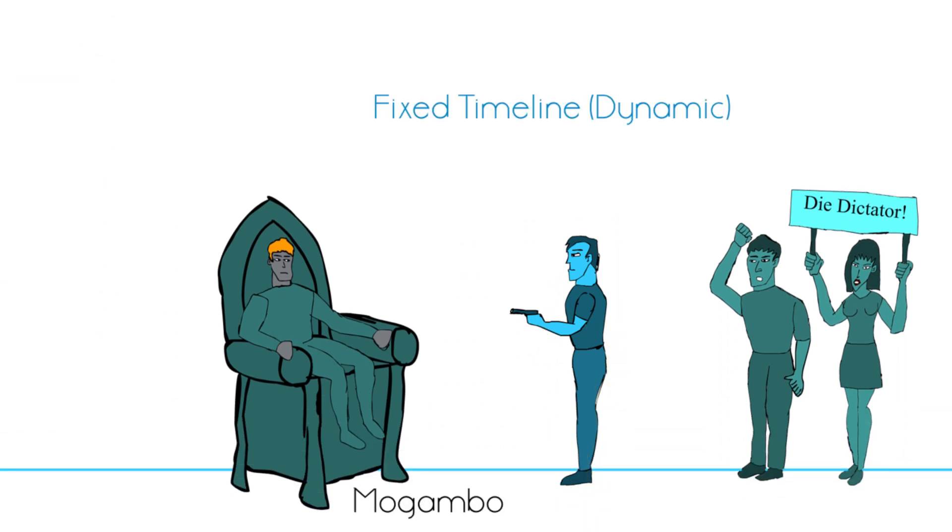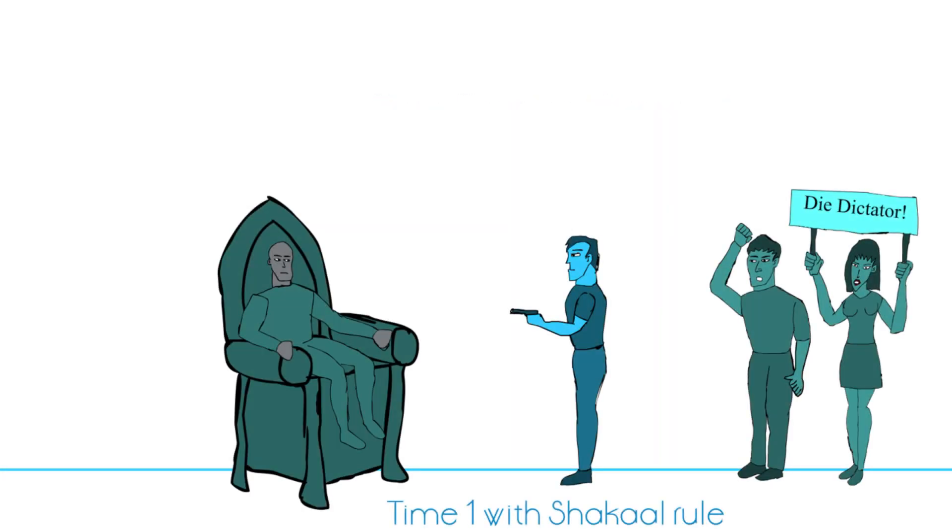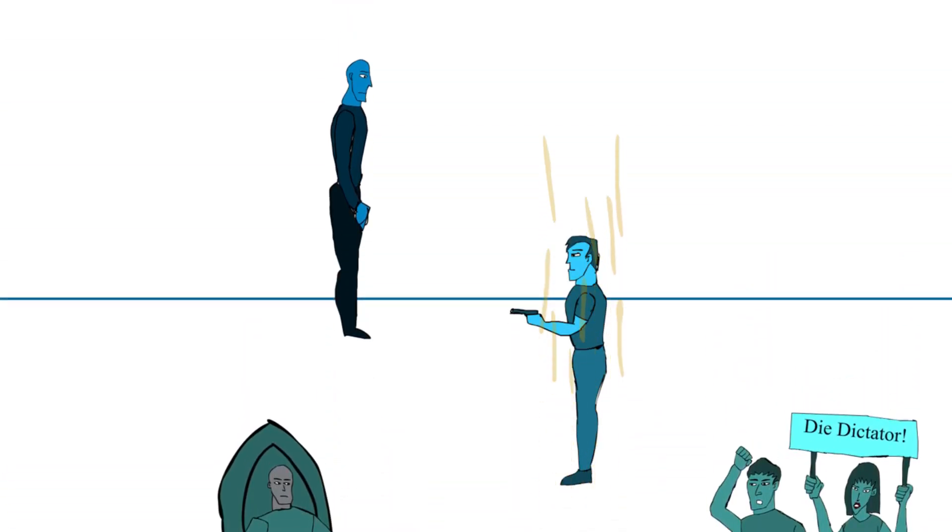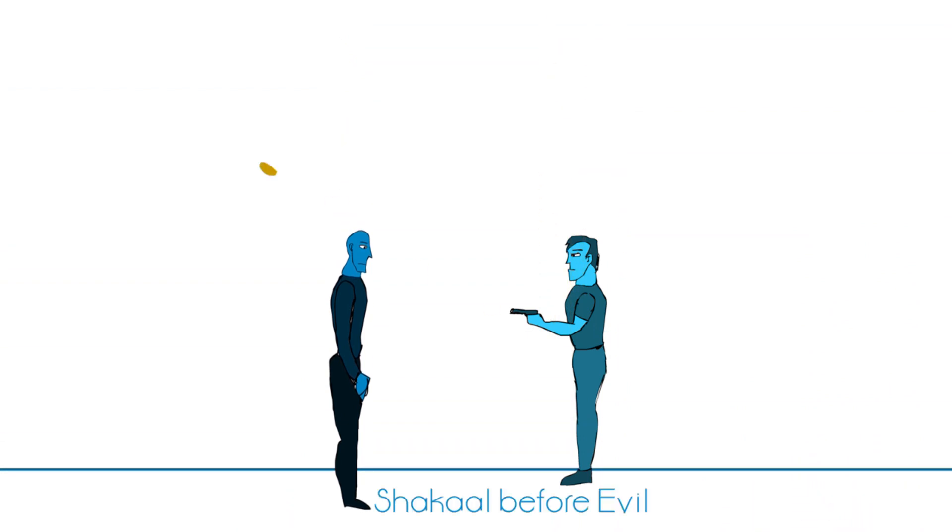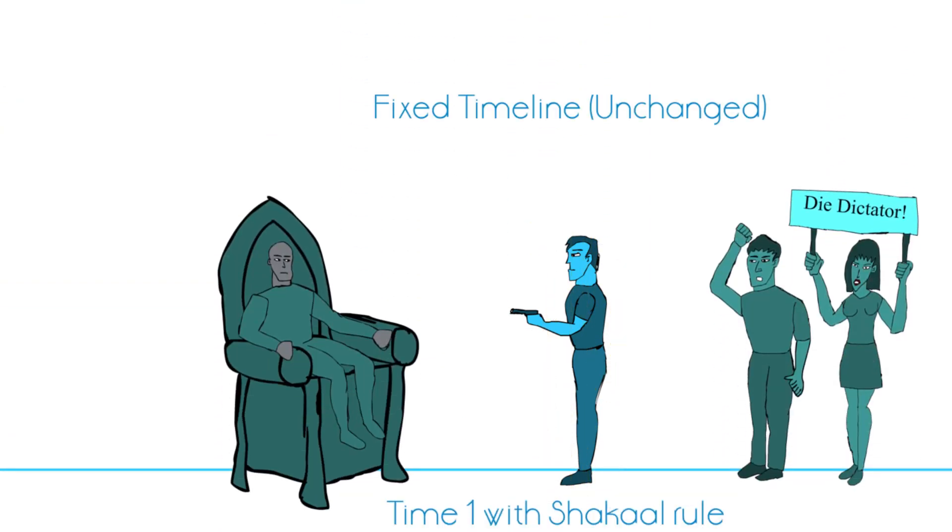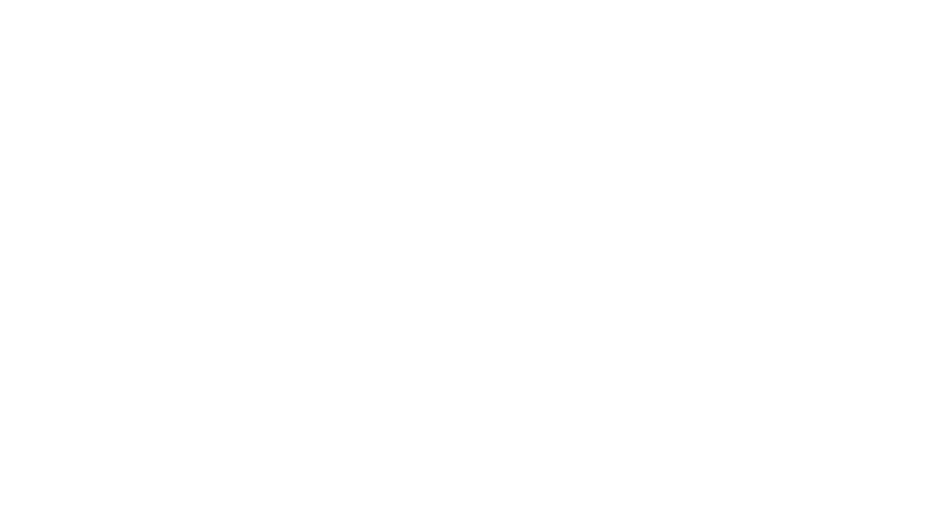There is one more subtype, called the loop time travel. Here, the hero goes back in time but fails to assassinate the dictator. This triggers the dictator to grab power and cause becomes its effect. So in a sense, the hero creates the dictator by traveling in time.